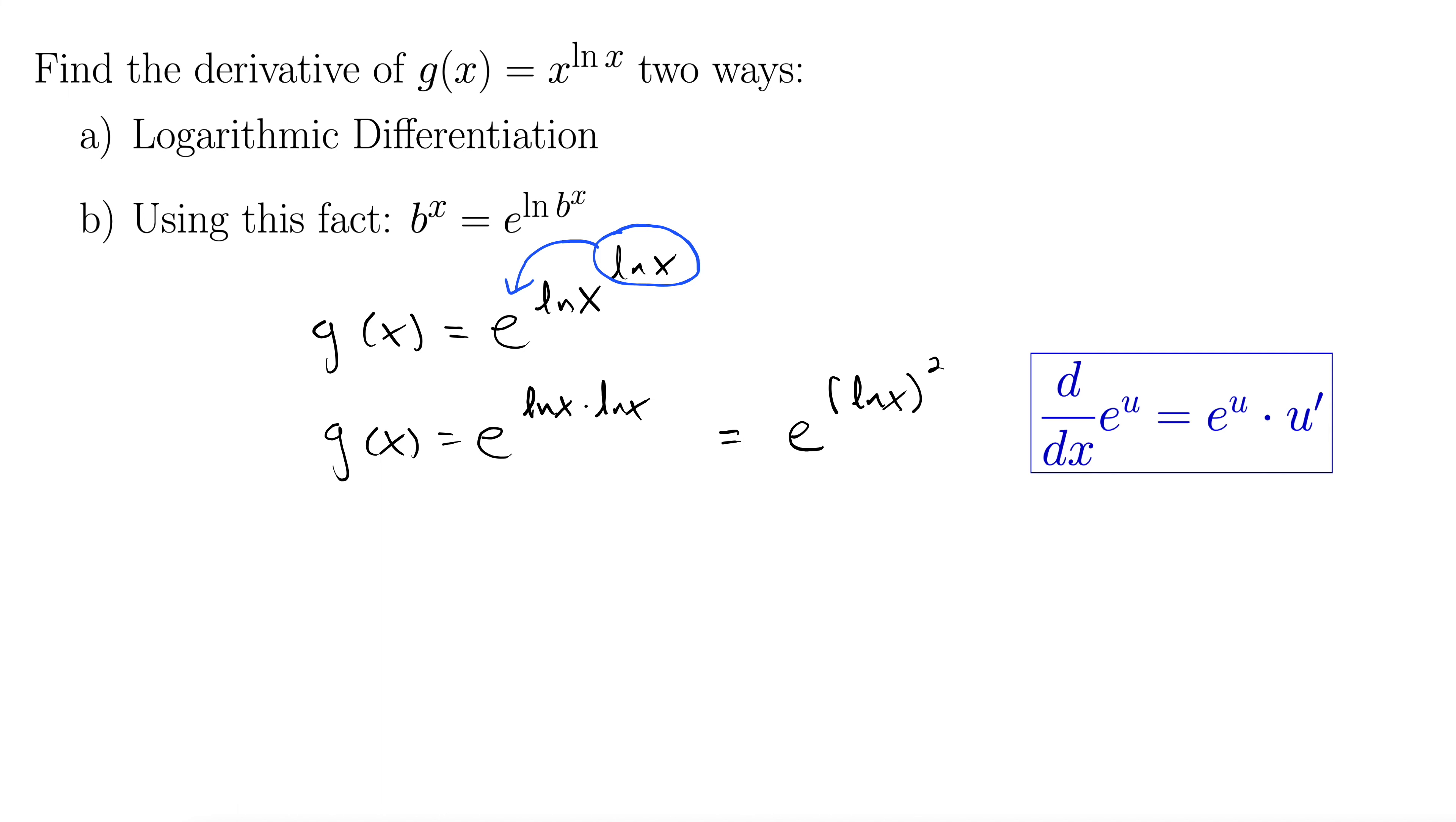Well the derivative of e to the u is e to the u times u prime. That's simply the chain rule applied to e to the u. So here our derivative g prime of x will be e to the natural log of x squared times that derivative times 2 natural log of x, there's the chain rule again, times the derivative of the inside again, 1 over x.